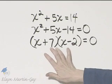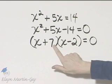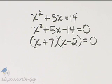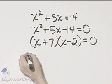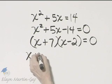Always check by multiplying. That's minus 2x plus 7x. That is 5x. Once you've factored completely, which I have, you set each factor equal to 0.